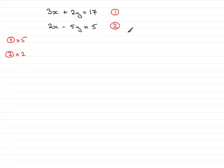Equation 1 times 5 gives us 5 lots of 3x which is 15x, 5 lots of 2y is plus 10y, and 5 lots of 17 is 85. Taking equation 2 times 2 gives 2 lots of 2x which is 4x, 2 lots of minus 5y is minus 10y, and 2 lots of 5 is 10.